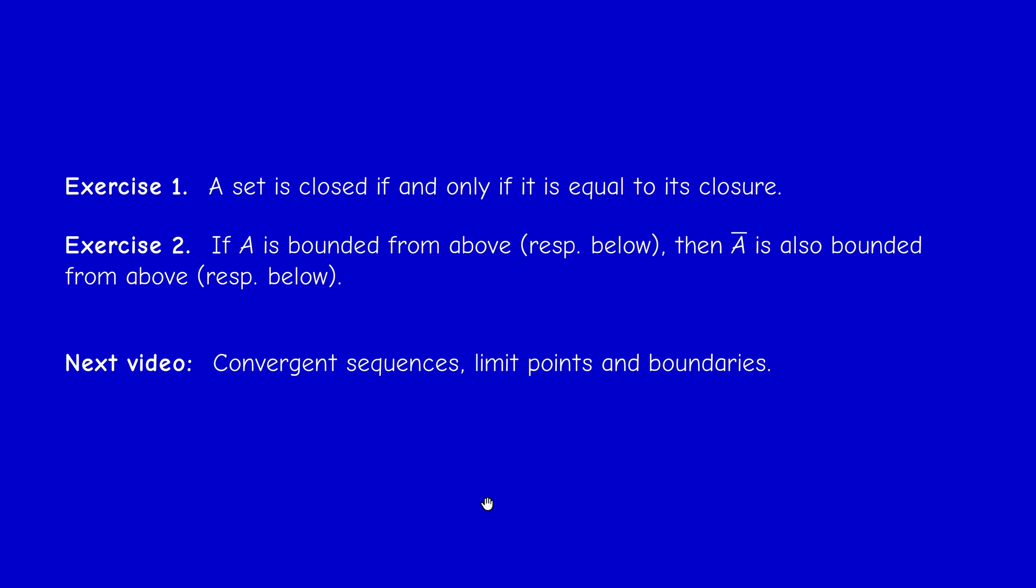Second exercise: if A is bounded from above, then A̅ is also bounded from above. So if A is bounded from below, then A̅ is also bounded from below. Therefore, if A is bounded, shortly bounded from above and below, then A̅ is also bounded. And this is a very useful result.